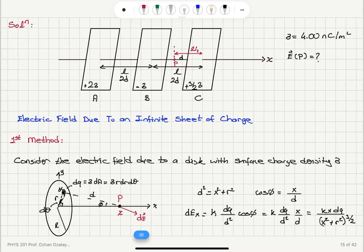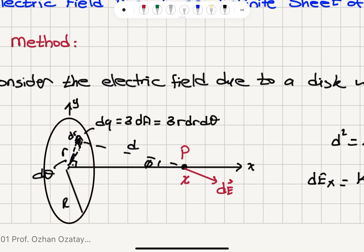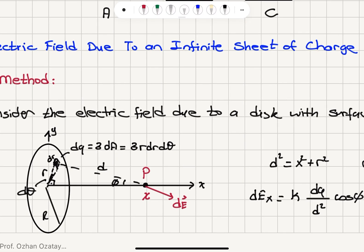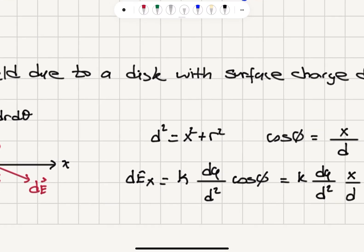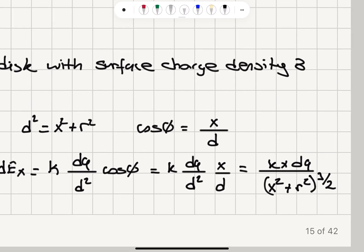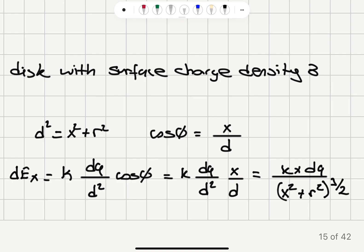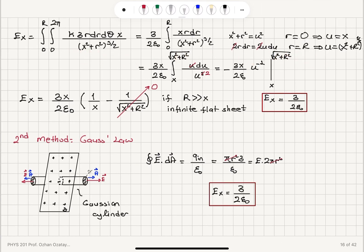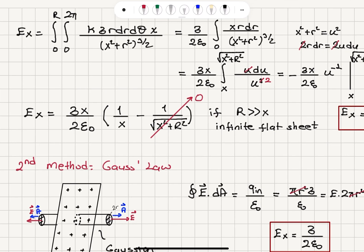We also used the electric field due to a uniformly charged disk. The electric field components other than the x-component cancel out due to symmetry. For a charge element σ r dr dθ, the field is k dq over d², and the x-component requires multiplying by cos φ, giving k dq over d² times x over d. Since d² = x² + r², integrating yields: E = σx/(2ε₀) · [1/x − 1/√(x² + r²)]. The infinite flat sheet limit applies when r is much greater than x.